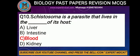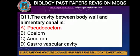Question number 10: Schistosoma is a parasite that lives in the blood of its host. This indicates that Schistosoma belongs to phylum Platyhelminthes. The correct option is C. Question number 11: The cavity between the body wall and alimentary canal is called pseudocoelom. This is a false cavity, present in pseudocoelomates. The correct option is A, pseudocoelom.